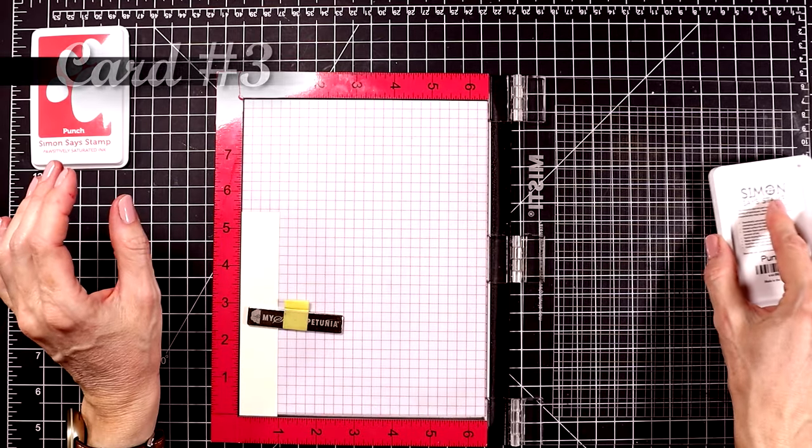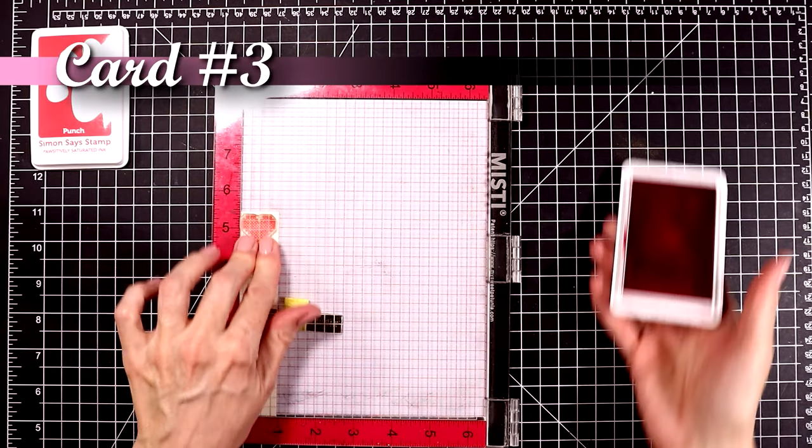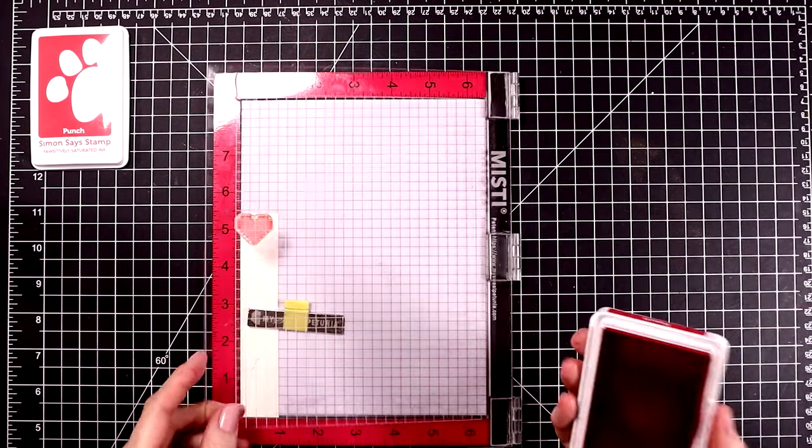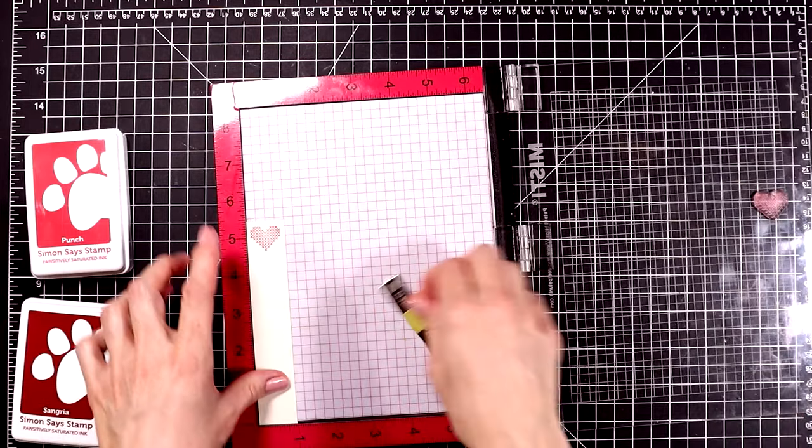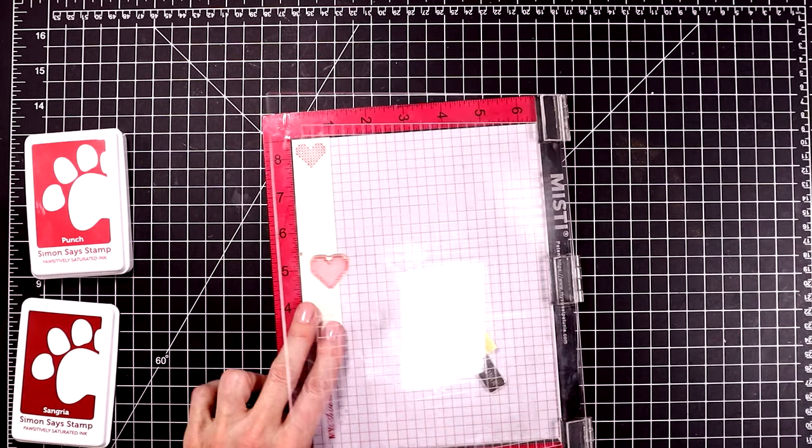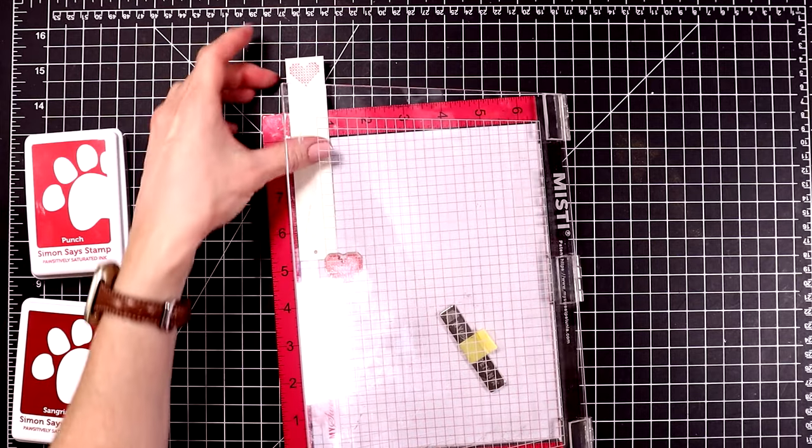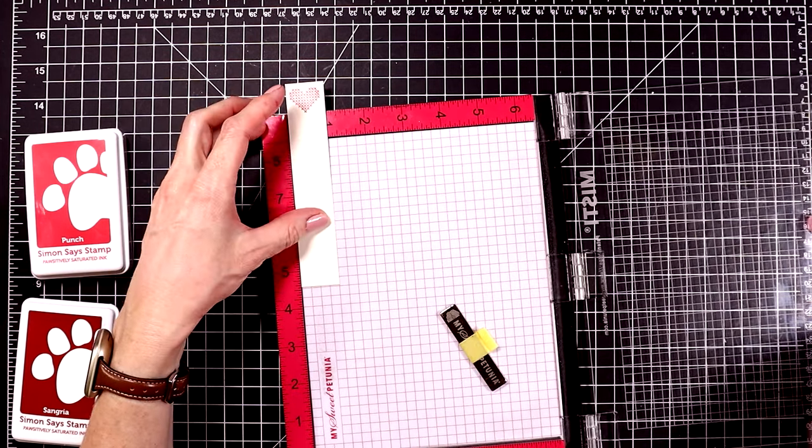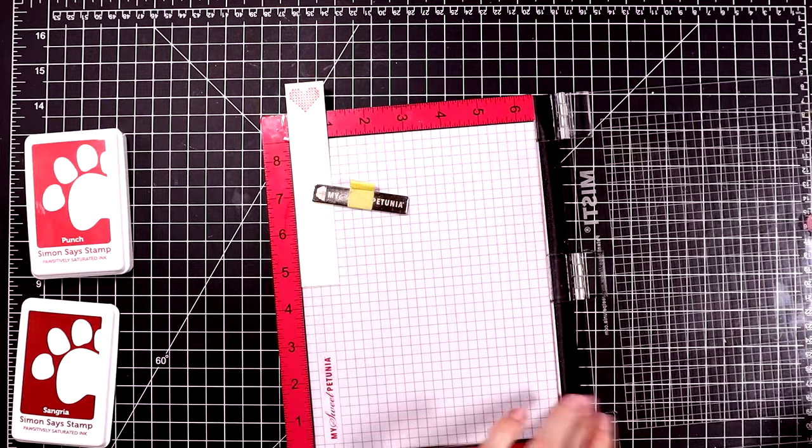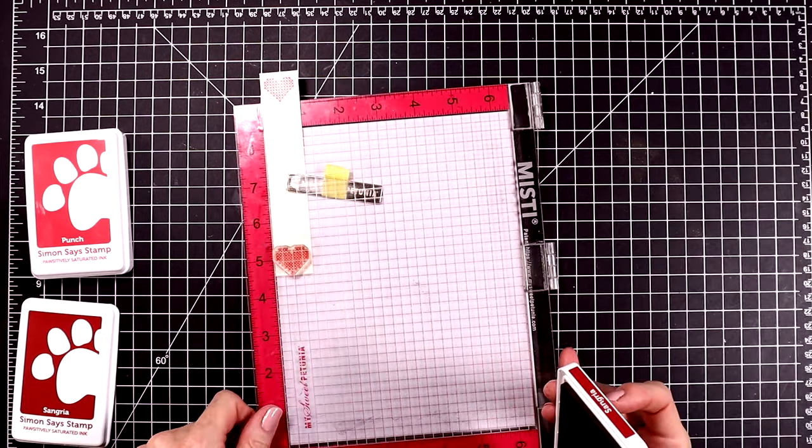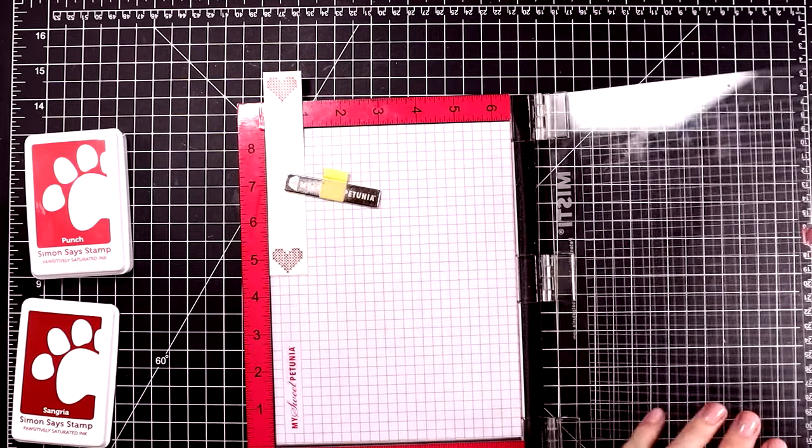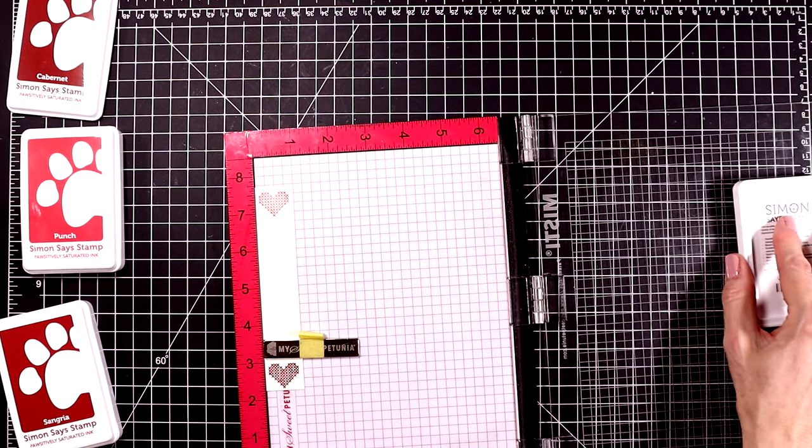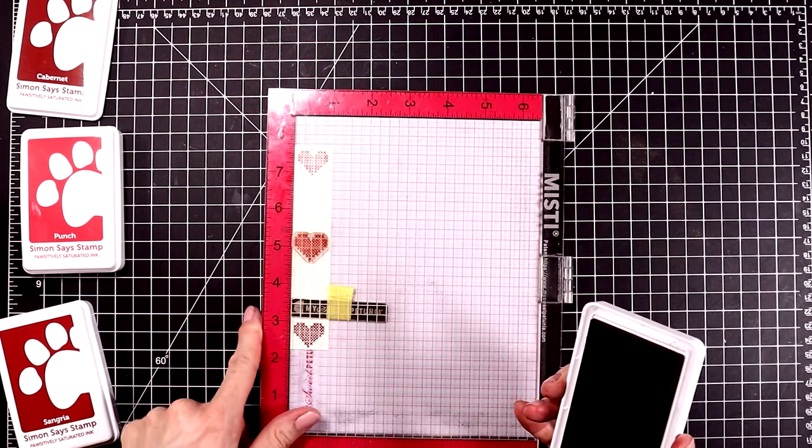So for my next card, I'm going to be focusing on the clear stamp and die of the month club. And in particular, this cute little stitched heart. The cardstock I'm using is called Alabaster and it measures five and a half by one inch. And I'm just going to eyeball this. You could measure it out. I want to fit five hearts on this strip of paper. So I'm stamping out the top heart first and then the bottom heart. And then I'll kind of eyeball where the heart will go in the middle. This just helps me to evenly stamp them out or at least as evenly as I can without measuring.